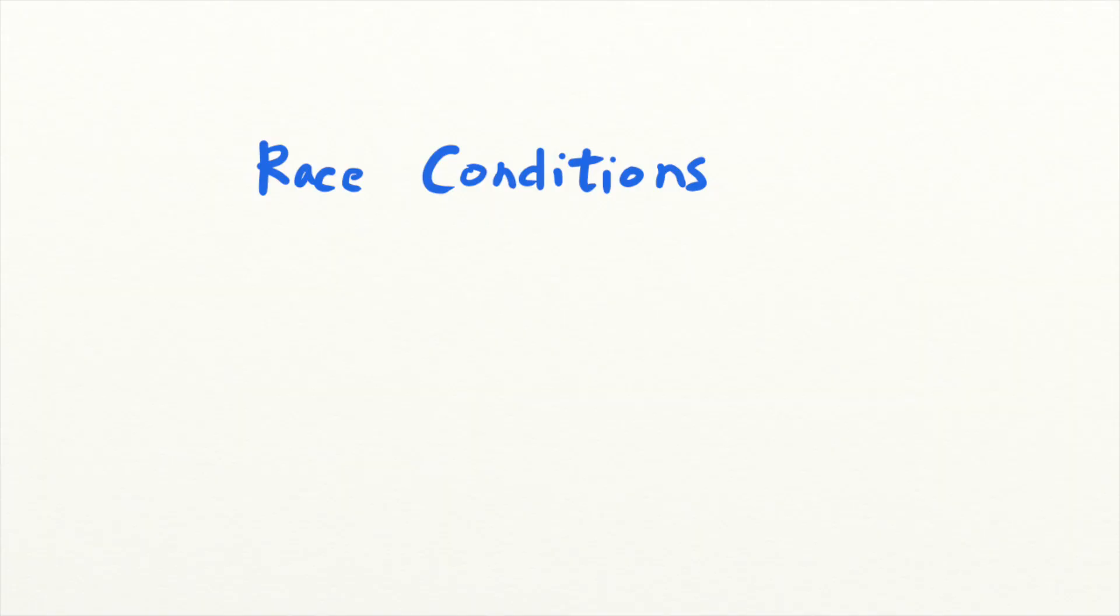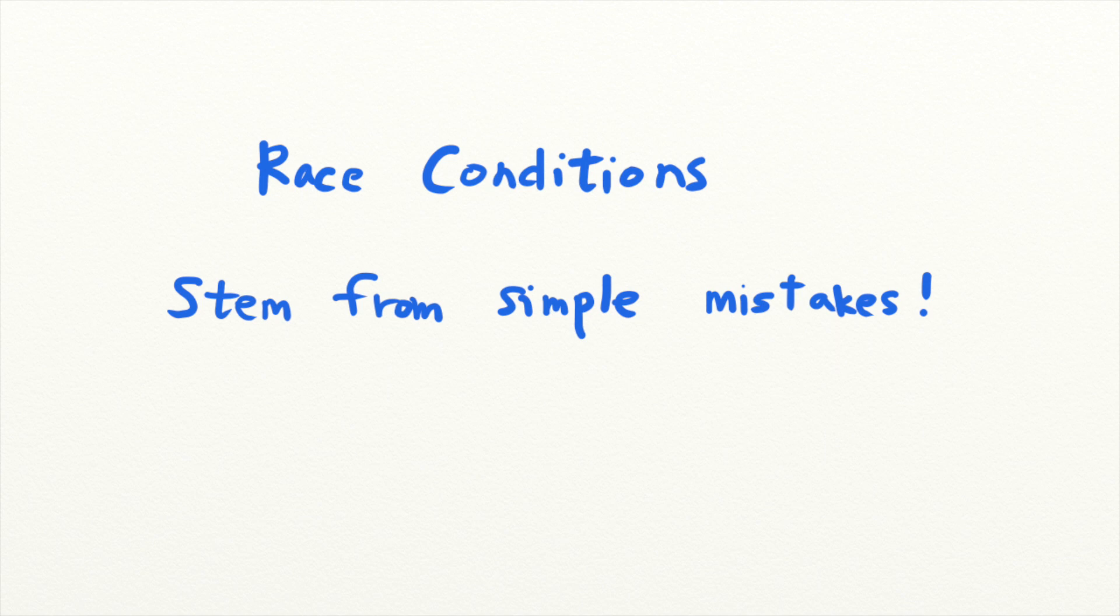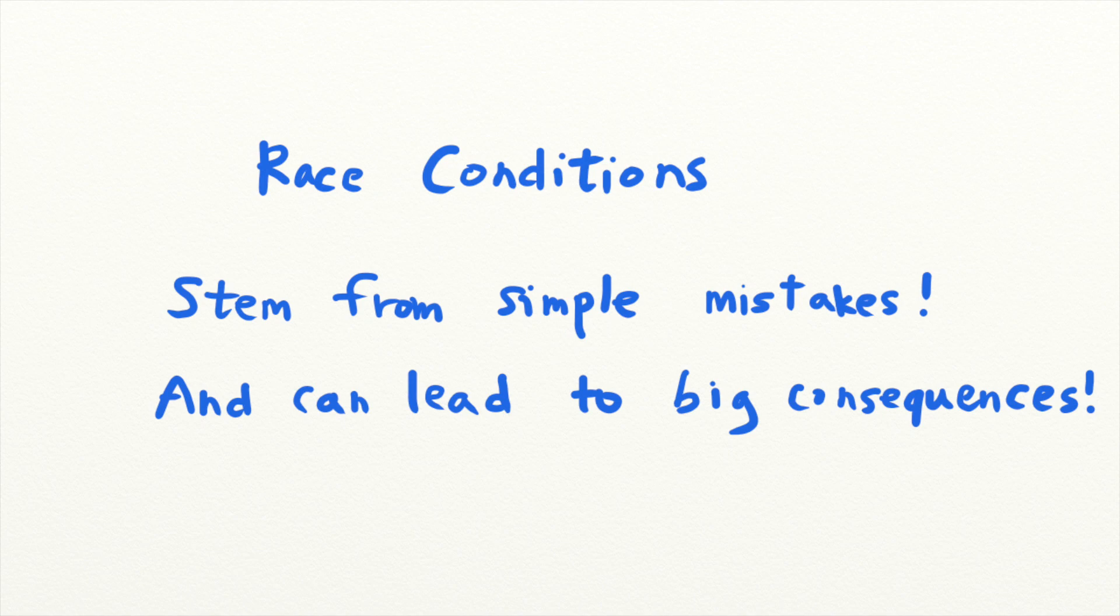Welcome back to Security Simplified. Race conditions are one of the most interesting vulnerabilities that I've got to learn about. These vulnerabilities stem from simple programming mistakes that developers commonly make and have been used by hackers to steal money from online banks, stock brokerages, and cryptocurrency exchanges.